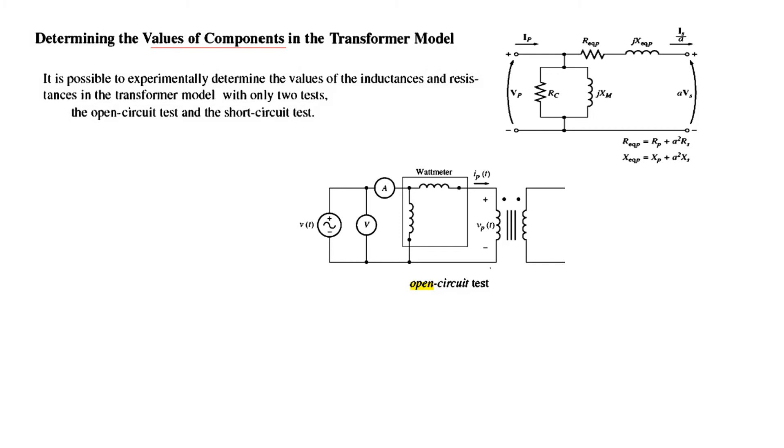In the open circuit test, we do not connect any load at the secondary side. And we have connected an ampere meter and a volt meter here. So we measure the current and the voltage. And you can see, with this, we'll be able to find out the parallel components. So Rc and Xm can be calculated by this method. And since they are in parallel, we can write them to be as an admittance Ye, which is equal to one over Rc minus one over minus J over Xm.